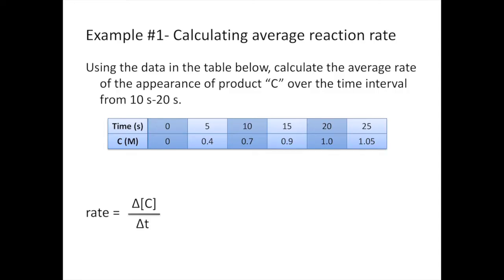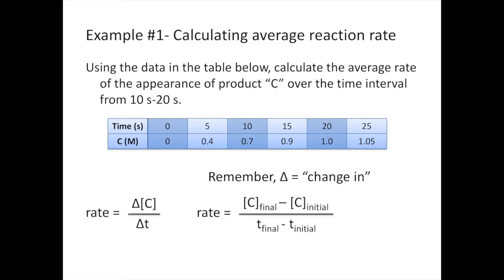In order to calculate the rate for this reaction, we're going to look at the change in the concentration of C over the change in time. Remember that your delta symbol means change in. So we're going to look at our final concentration of product C minus our initial concentration of product C, divided by our final time minus our initial time.